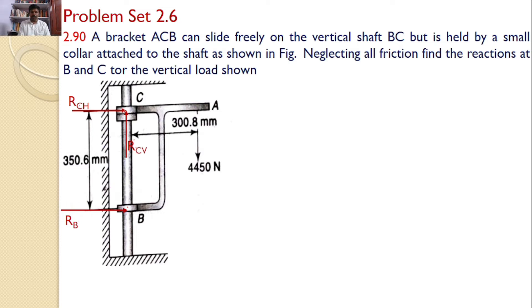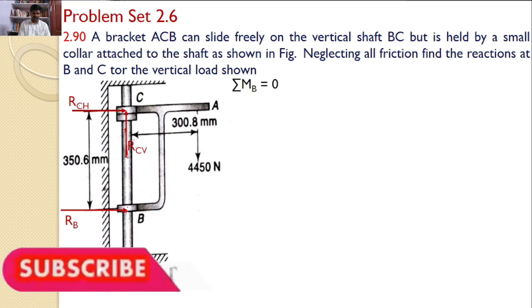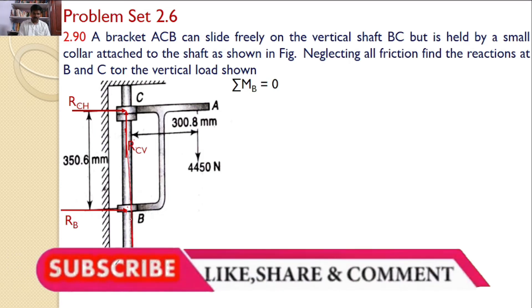Now, I can take the moments about any point. So I will take the moments about point B. Now, if we take the moments about point B, clearly we can see RB is passing through the point B and the line of action of RCV is also passing through the point B.